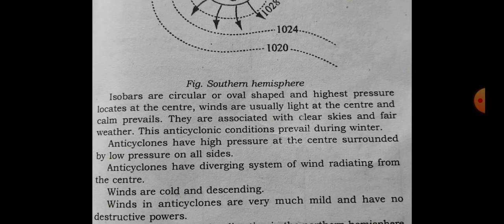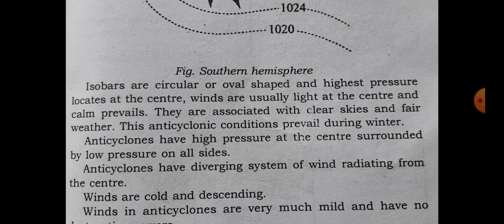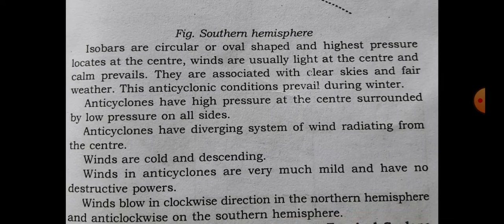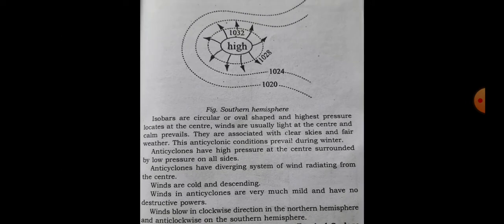Isobars are circular or oval-shaped and the highest pressure is located at the center. Winds are usually light at the center and calm prevails. They are associated with clear skies and fair weather. Anti-cyclone conditions prevail during winter. Anti-cyclones have high pressure at the center surrounded by low pressure on all sides. Anti-cyclones have a diverging system of wind radiating from the center. The winds are cold and descending. Winds in anti-cyclones are very much mild and have no destructive powers. Wind blows in clockwise direction in the northern hemisphere and anti-clockwise in the southern hemisphere.